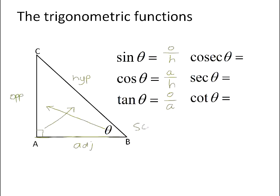And you can remember this as SOH CAH TOA. Sine is opposite over hypotenuse. Cos is adjacent over hypotenuse. Tan is opposite over adjacent.